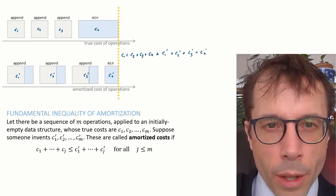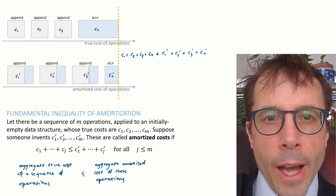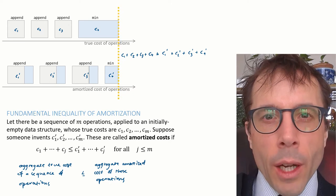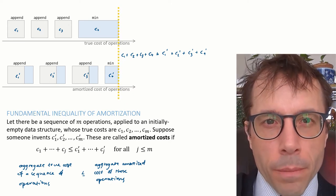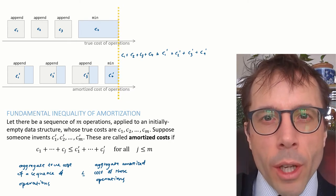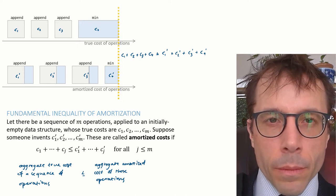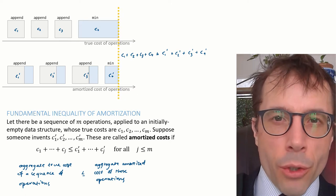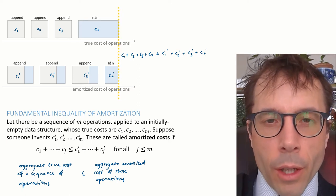The way to remember this is that for any sequence of operations, the aggregate true cost of the sequence of operations must be less than or equal to the aggregate amortized cost of those operations. In other words, the amortized costs give us an upper bound on aggregate costs. This inequality is called the fundamental inequality of amortized analysis, and it's the thing to remember to make sense of everything we're going to do next.